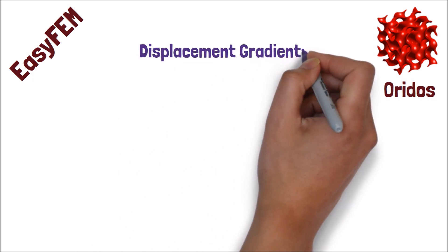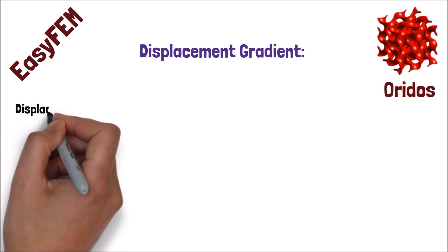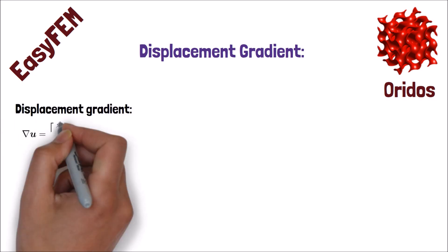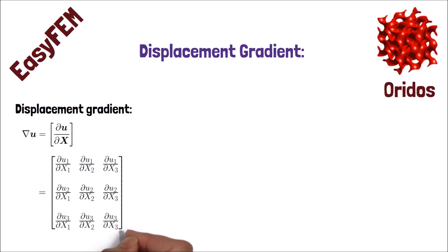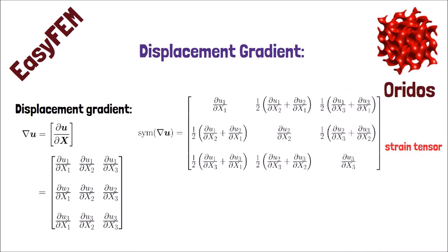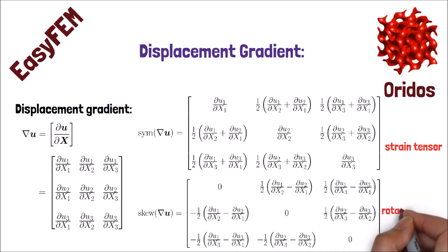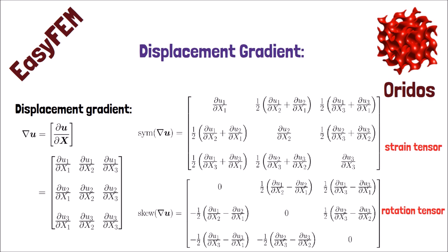It's called the displacement gradient, which we will use to develop the strain tensor. Physically, the displacement gradient shows the tangent vector to describe the relationship between the undeformed and deformed configurations. If we decompose the displacement gradient tensor, the symmetric tensor is called the strain tensor, which we are going to use a lot in this video series. Its skew-symmetric tensor is called the rotation tensor. You can find this definition in any continuum mechanics textbook.